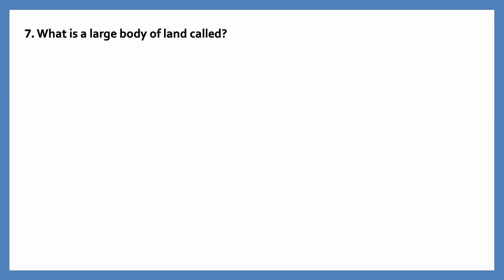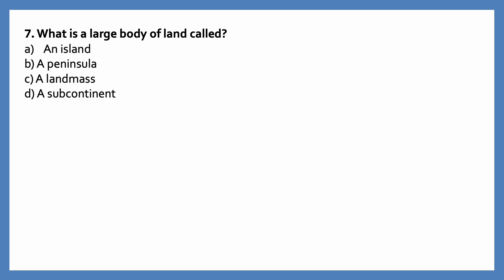What is a large body of land called? Options are an island, a peninsula, a landmass, a subcontinent. The correct answer is a landmass — a landmass is a large body of land.